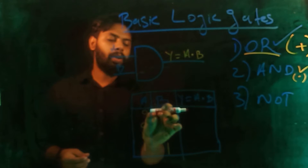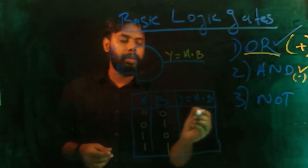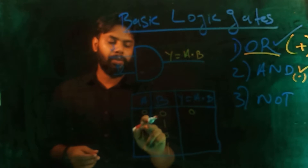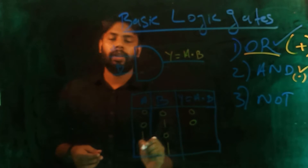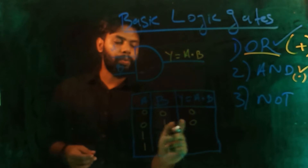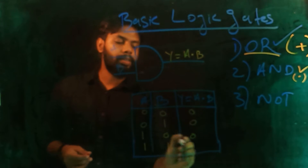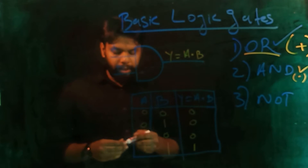The AND gate truth table: 0 dot 0, logical multiplication value is 0. 0 into 1, logical multiplication value is 0. 1 into 0 gives 0. 1 into 1 gives 1.